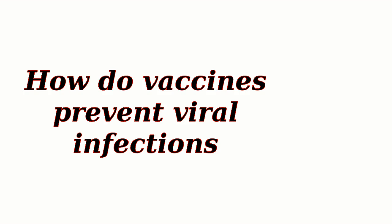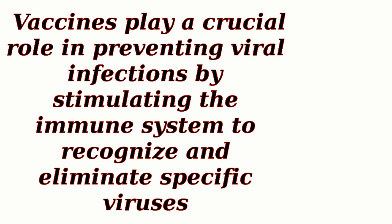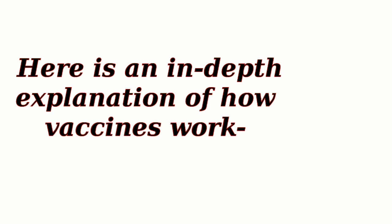How do vaccines prevent viral infections? Vaccines play a crucial role in preventing viral infections by stimulating the immune system to recognize and eliminate specific viruses. Here is an in-depth explanation of how vaccines work.